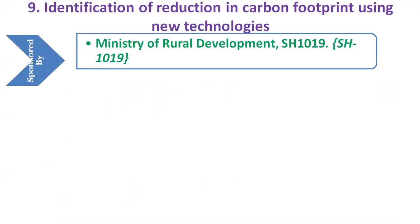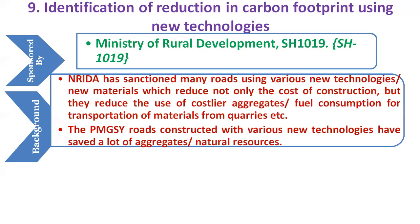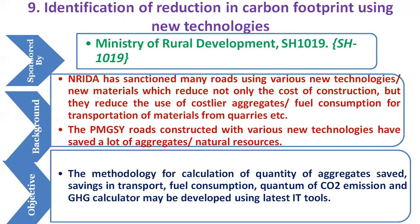The ninth problem statement is on identification of reduction in carbon footprint using new technologies, sponsored by Ministry of Rural Development with code SH-1019. The National Rural Infrastructure Development Agency has sanctioned many roads using various technologies and new materials that reduce not only the cost of construction but also the use of costlier aggregates and fuel consumption for transportation of materials from quarries. Prime Minister Grameen Sadak Yojana roads constructed with new technologies have saved a lot of aggregates and natural resources. A methodology for calculation of quantity of aggregates saved, savings in transport, fuel consumption, quantum of CO2 emissions and greenhouse gases may be developed as part of this problem statement using the latest information technology tools.